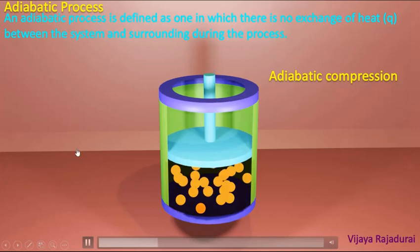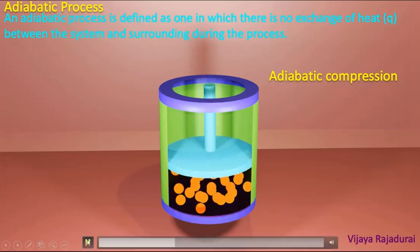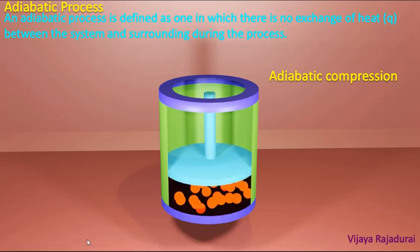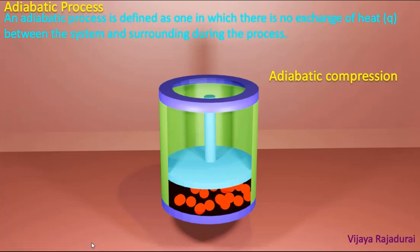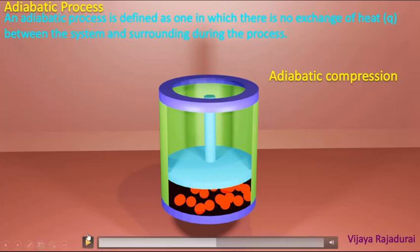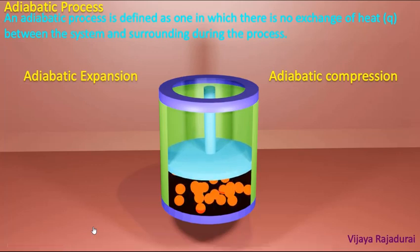During adiabatic compression, the volume of the gas molecules decreases, so the pressure of the gas molecules increases, and as a result the temperature also increases. The increase of temperature is indicated in red color. Next we see what happens in adiabatic expansion.